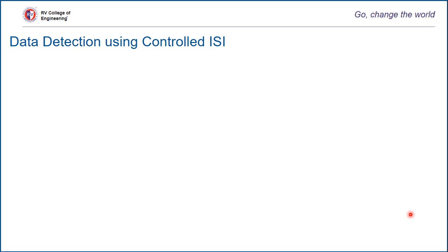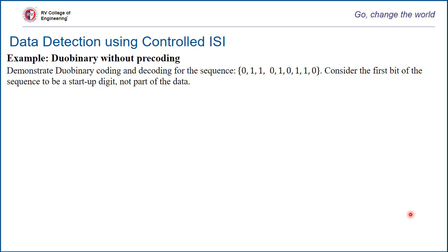Let's take a particular bitstream and try to transmit using duobinary coding with pre-coder and without pre-coder, and try to detect at the receiver end. As a first example, we'll take a duobinary case without pre-coding. Let's try to demonstrate duobinary coding and decoding process for the given sequence. This is one example I have considered for this video.